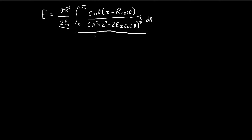Picking up where we left off in the last video, the challenge now is to solve this integral. We can do it by using substitution. The substitution we're going to use is u equal to cosine of theta. Taking the derivative of both sides, you have negative sine theta, so negative du is equal to sine theta times d theta.